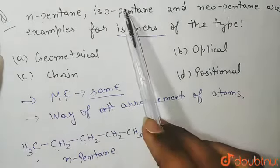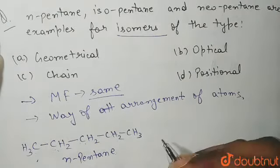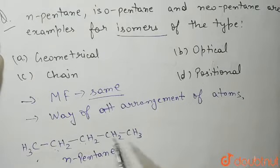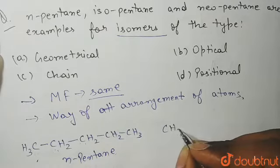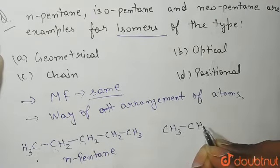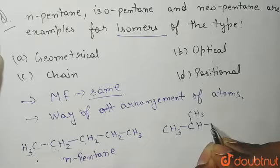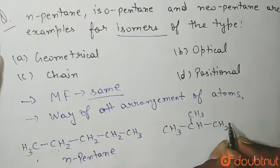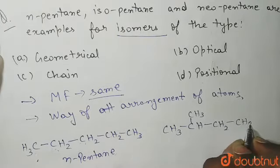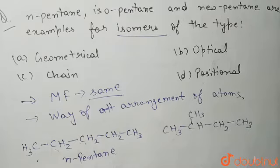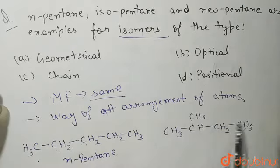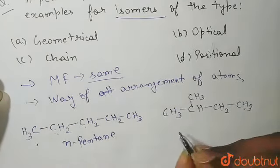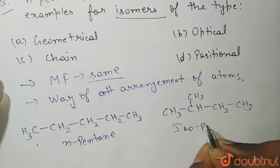Next is isopentane. Isopentane has one of the CH3 groups placed on a middle carbon, giving a structure like: CH3–CH(CH3)–CH2–CH3. Counting the carbons: 1, 2, 3, 4, and 5. This is our isopentane.